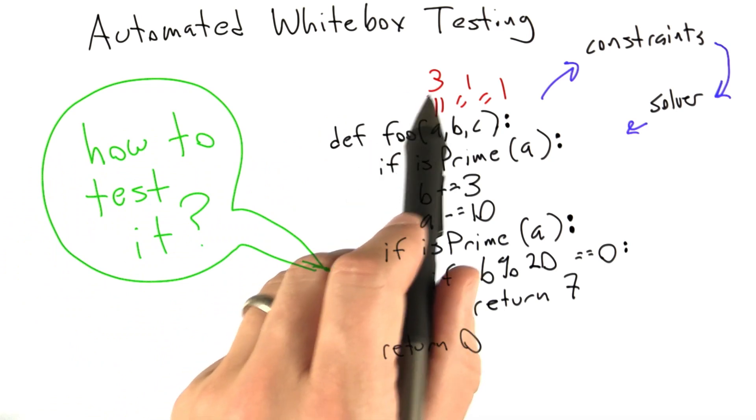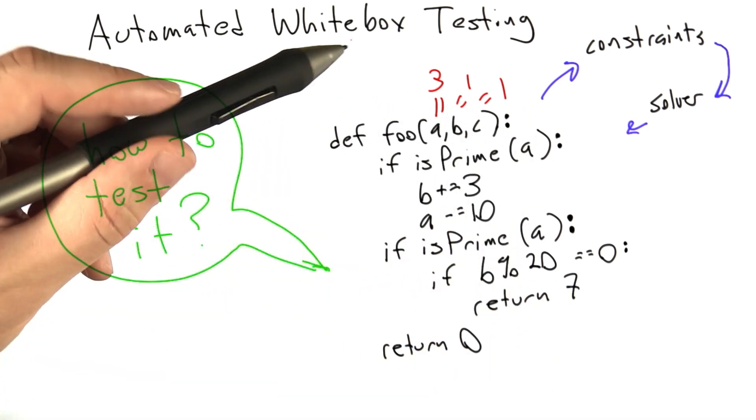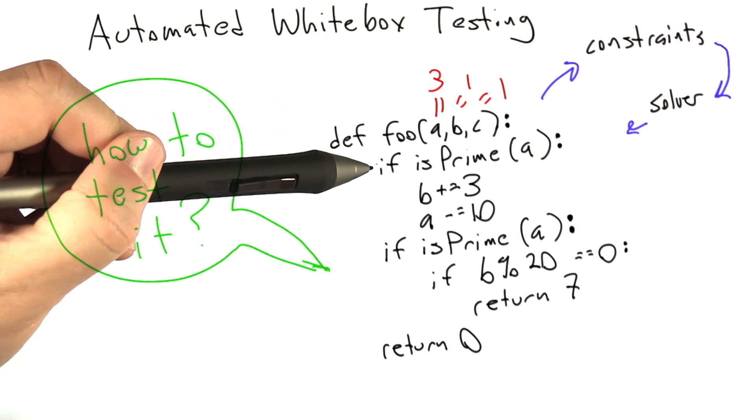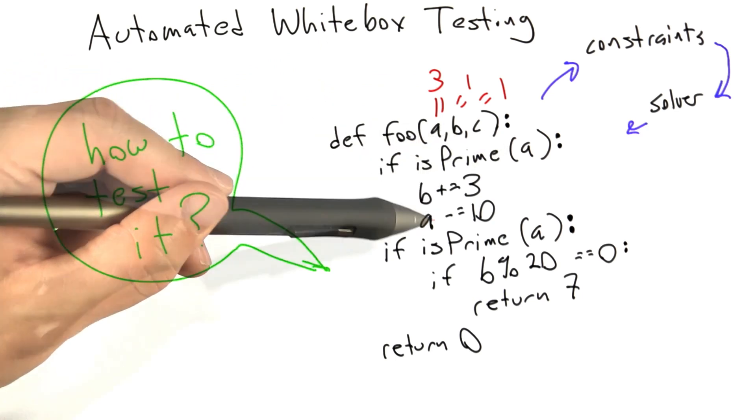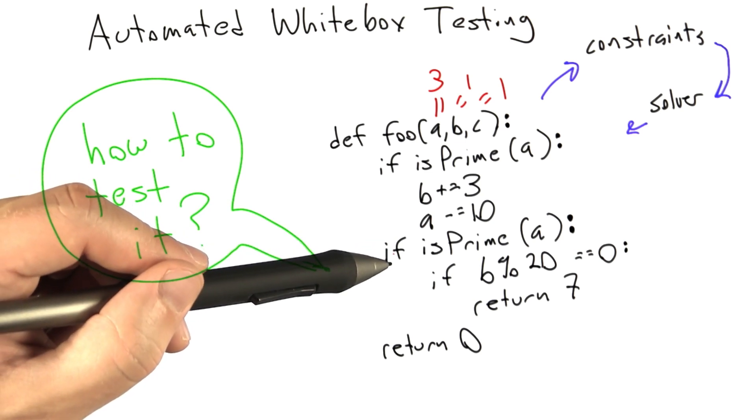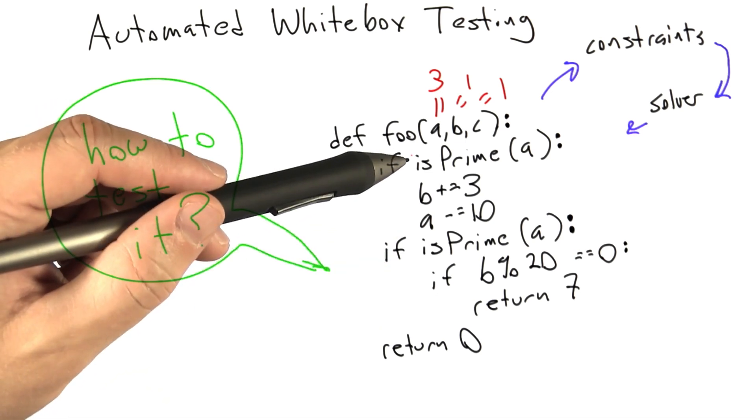The automated white box testing tool has come up with a new set of inputs to this function, and it's going to run it again. This time, the first test is going to succeed. A is prime. We're going to increment B by 3, decrement A by 10, and now A is going to fail the primality test, since our primality check is only designed to detect positive.